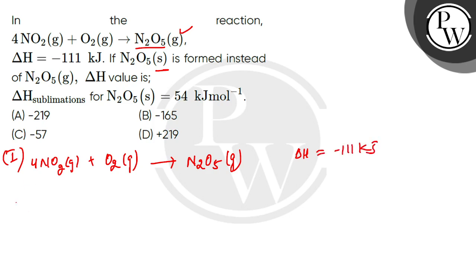Now we are saying that the same reaction will get into the same reaction but what will happen in this? N2O5 will become solid. So the same reaction I have written in this way. So N2O5 will become solid. So what will be delta H value?